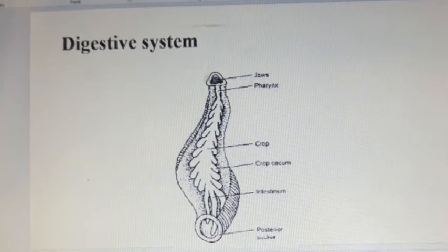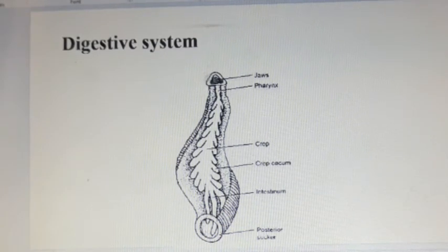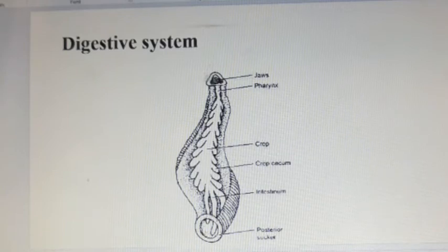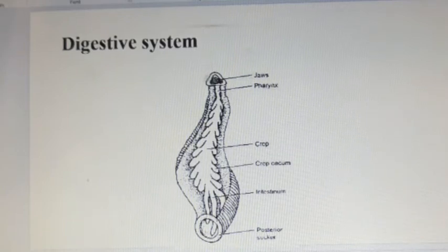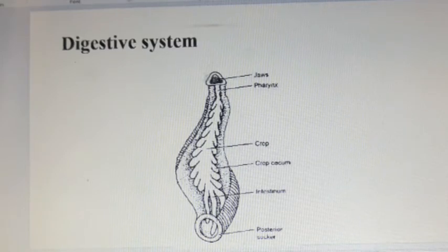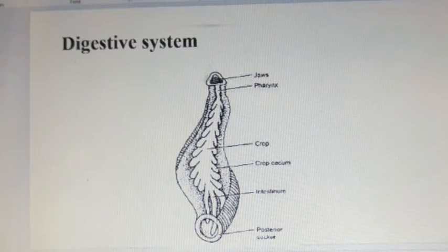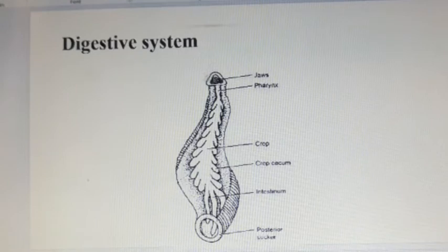The mouth of a leech opens in the middle of the anterior sucker. While feeding, a leech attaches to its prey by the anterior sucker and either extends its proboscis into the prey or uses its jaws to slice through host tissues. Glands are present. These are salivary glands. These glands secrete and enter anticoagulants called hirudin. Hirudin prevents blood from clotting.